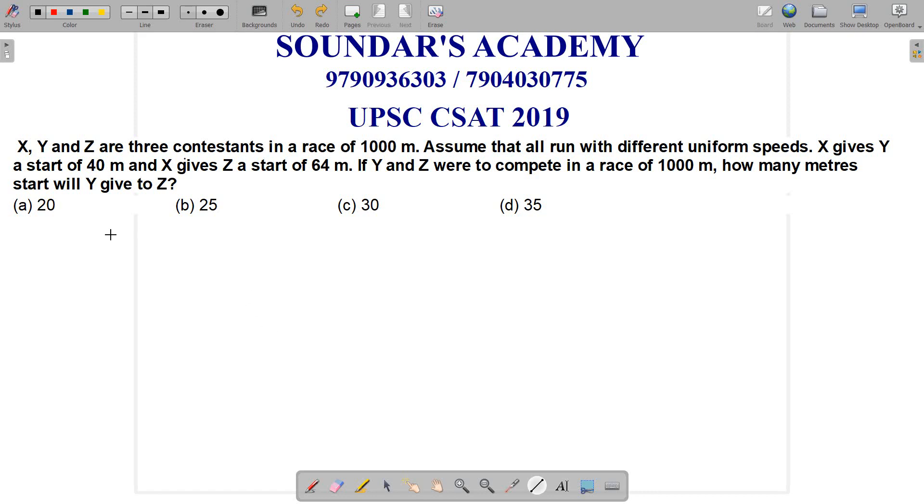The question is: X, Y and Z are 3 contestants in a race of 1000m. Assume that all run with different uniform speeds. X gives Y a start of 40m and X gives Z a start of 64m. If Y and Z were to compete in a race of 1000m, how many meters start will Y give to Z?